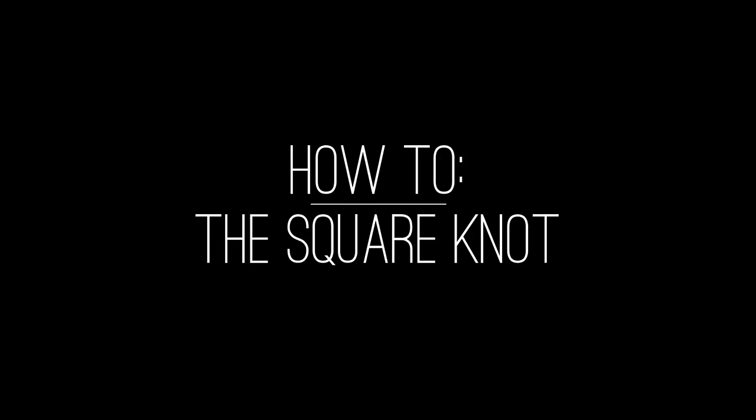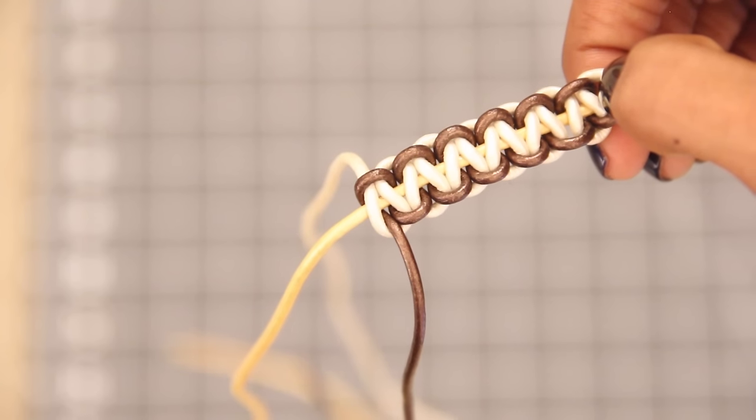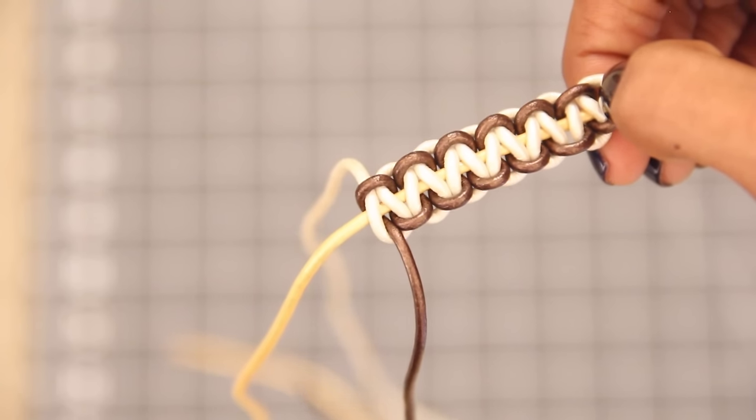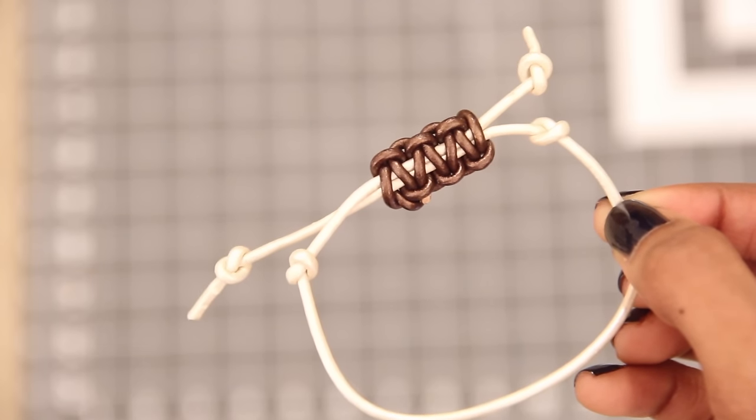This video is all about square knots. I'll show you how to use them to form a bracelet and how to use them to form a sliding closure.